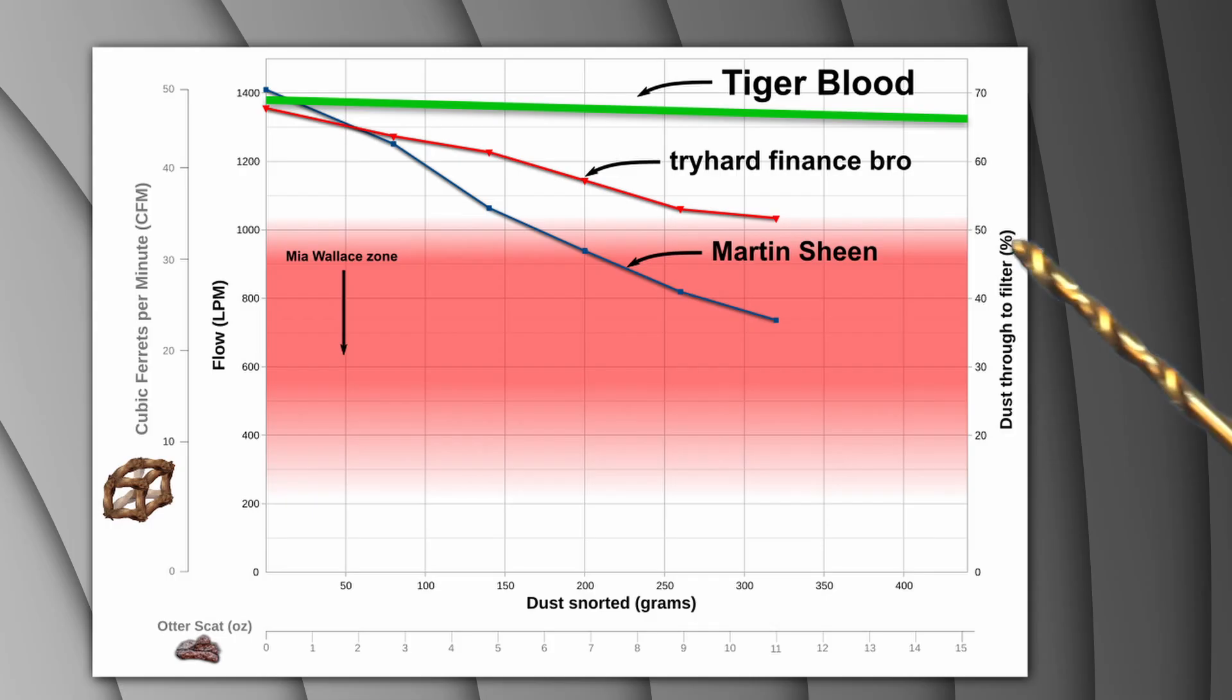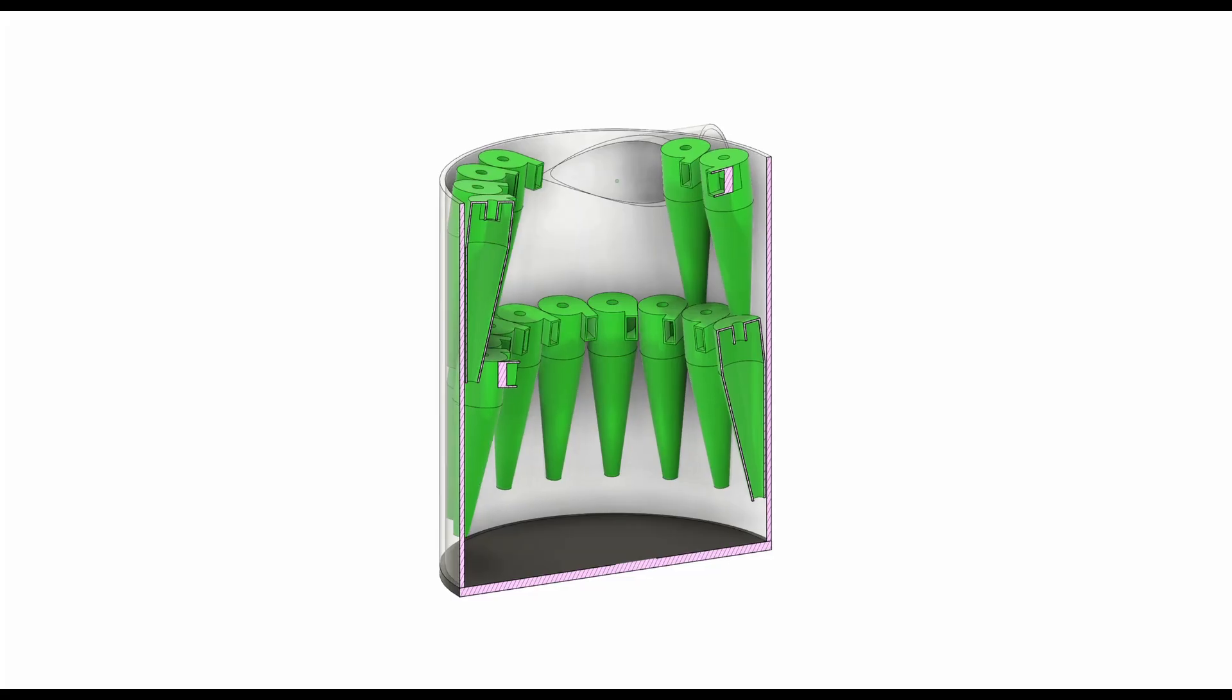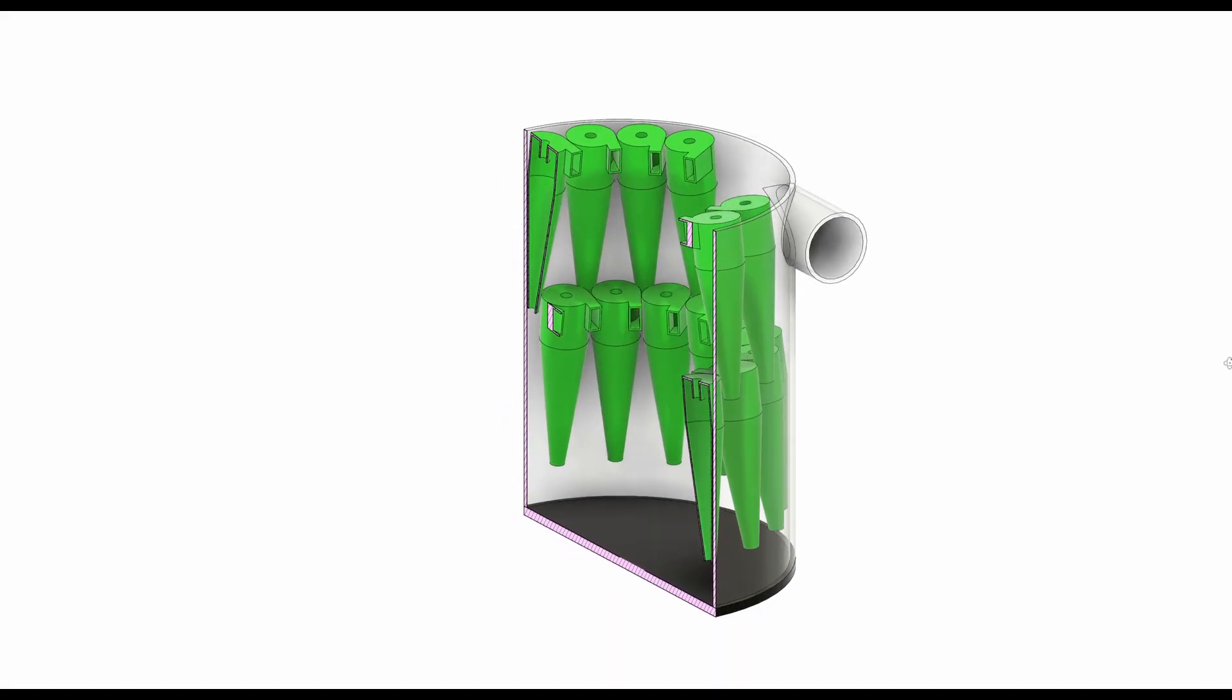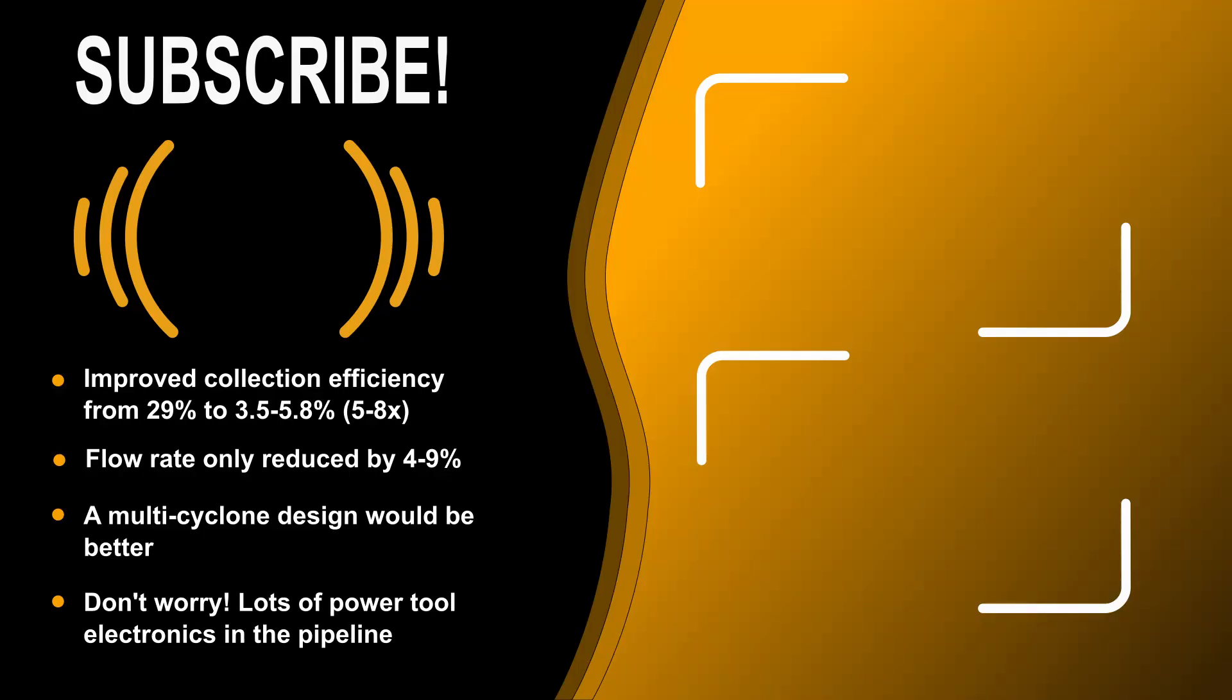But I feel this is only finance bro levels of tolerance and not worthy of the tiger blood moniker. I want to try a multi-cyclone so that I can use tried and tested cyclone designs and not be stuck polishing a turd. For that I'm going to need a bigger 3D printer. If you're keen to see me try and achieve tiger blood status then let me know in the comments.